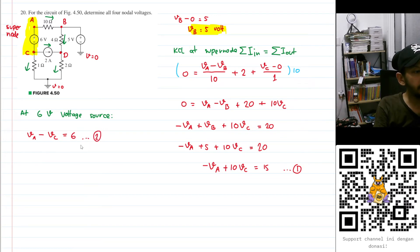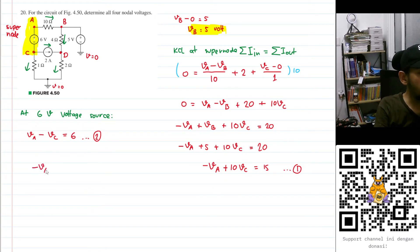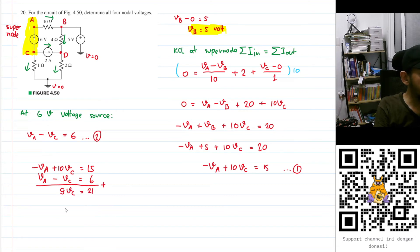We have two equations and two unknowns, so let's add them. Equation 1: minus VA plus 10VC equals 15. Equation 2: VA minus VC equals 6. Adding them gives 9VC equals 21, so VC equals 21 divided by 9, which is 7/3, approximately 2.33 volts.